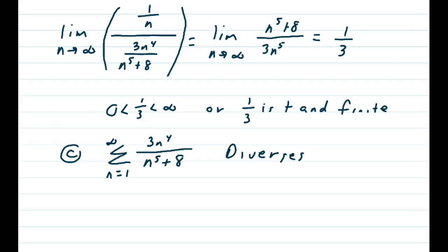Doing the limit portion, you have a limit as n approaches infinity of 1 over n over our unknown series, 3n to the 4th over n to the 5th plus 8. We flip those fractions upside down. We get limit as n approaches infinity of n to the 5th plus 8 over 3n to the 5th.